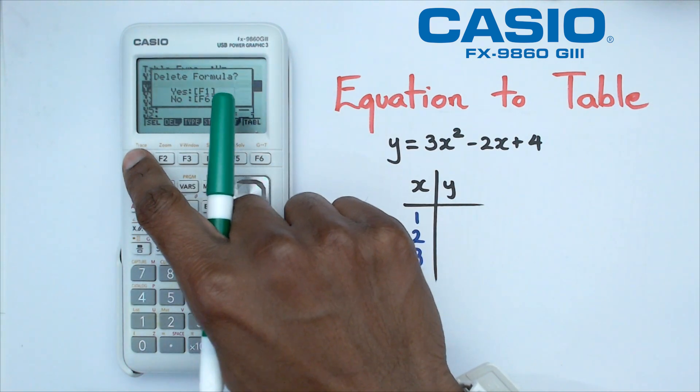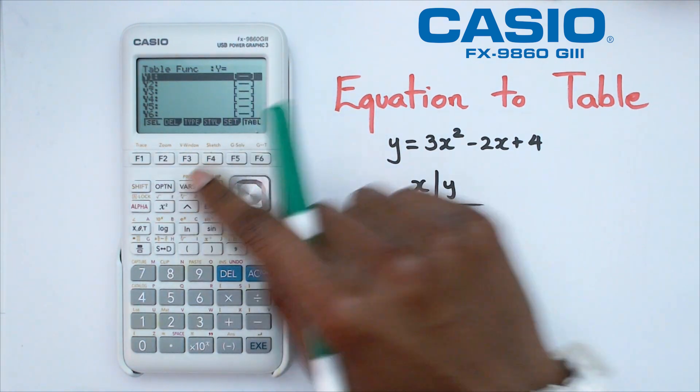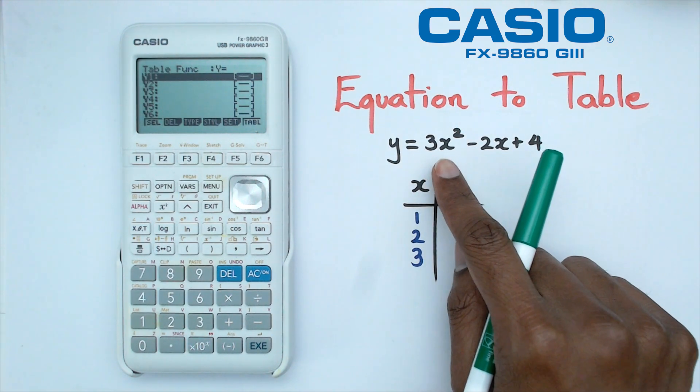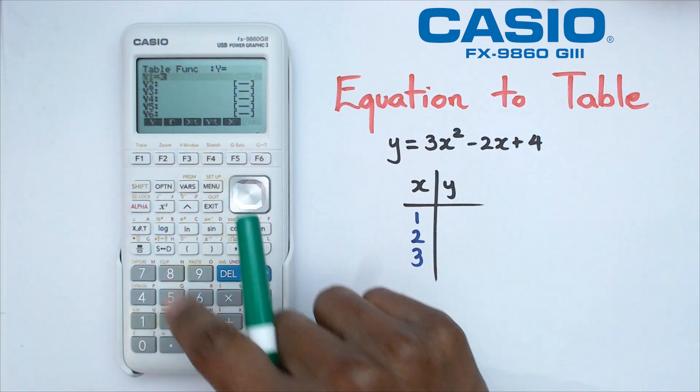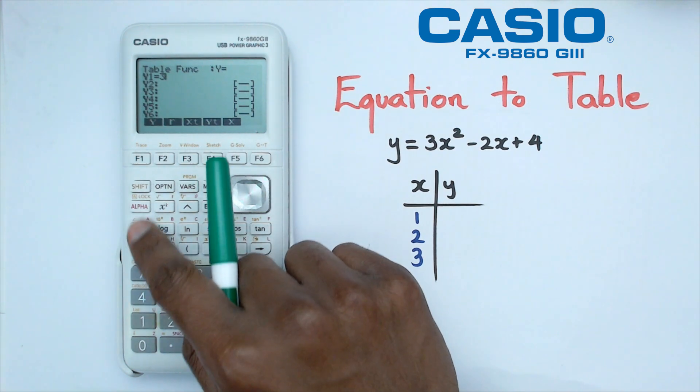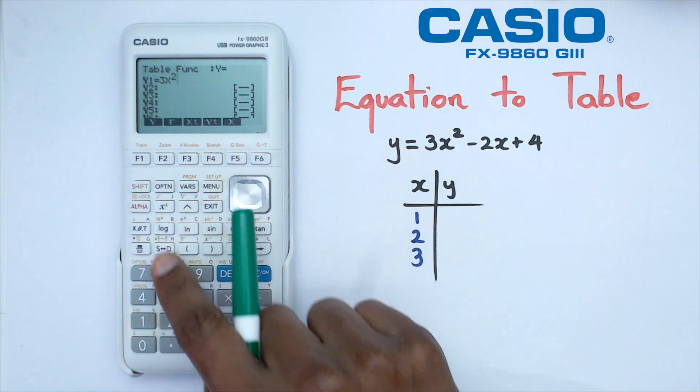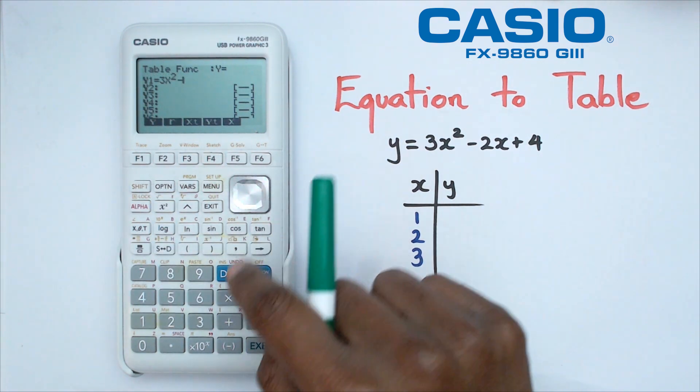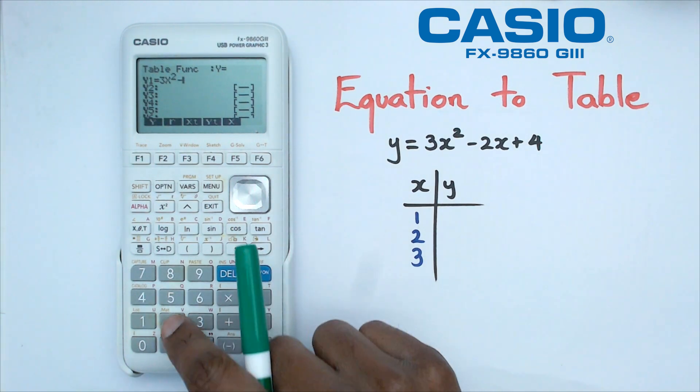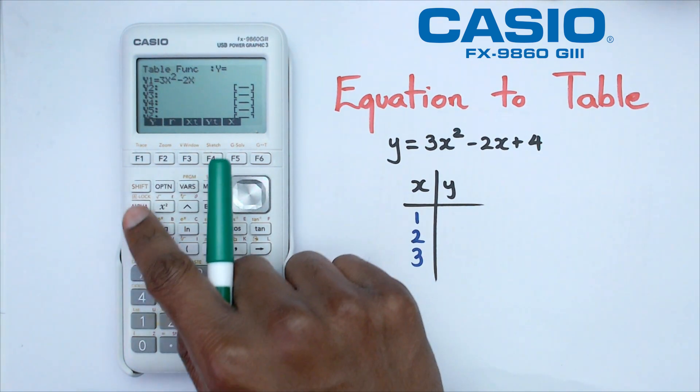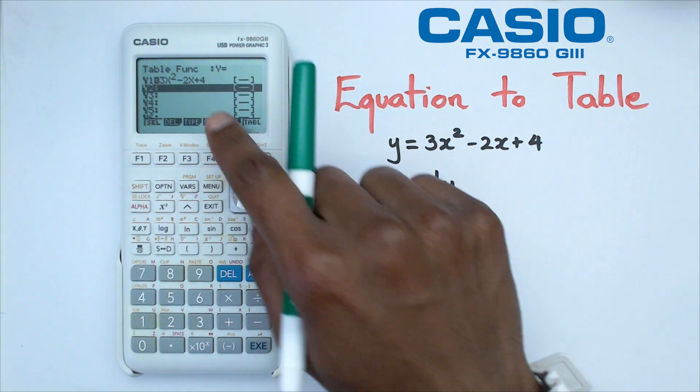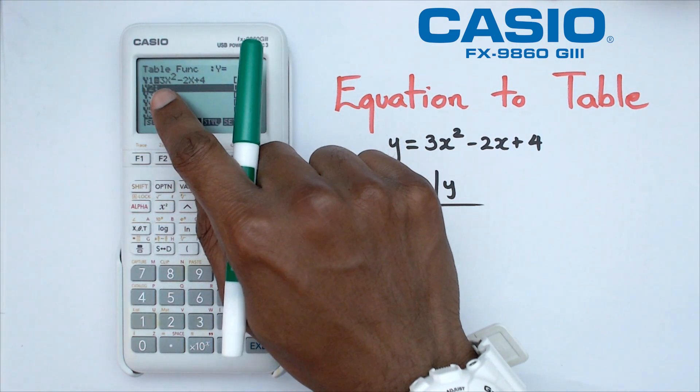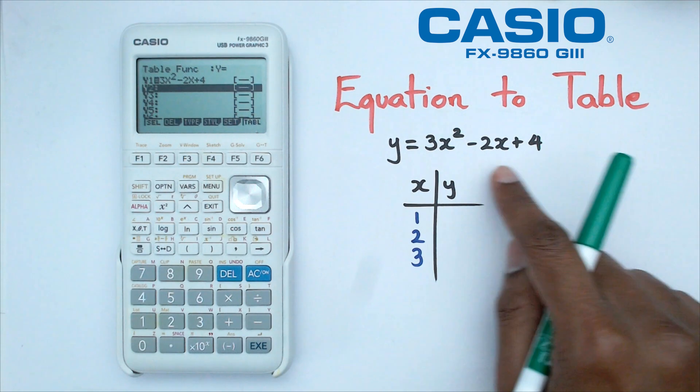We're going to go into y1 and put in this particular formula which is 3x²-2x+4. We've got 3, we're going to use the x which is under the alpha, so that's 3x² minus 2x, we're going to use the x under the alpha again, plus 4. Click on enter. Now it has y1 as this particular function.